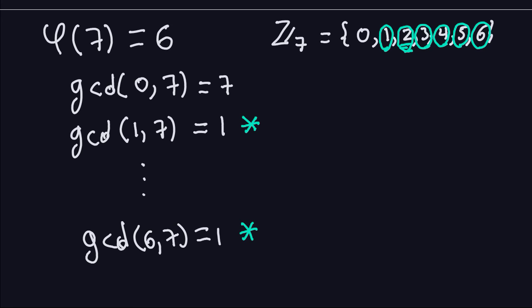You can imagine how hard this would be if I had to compute, for example, phi of 100. I'd have to go through 0 to 99 and check each one of them. You can see that that's not very efficient — it's really a brute force computation, and not the way you'd want to do it.